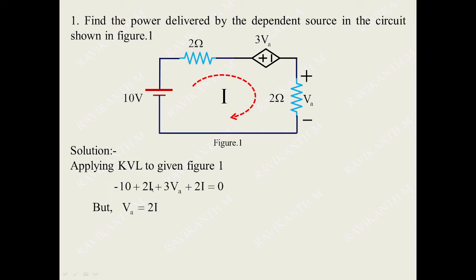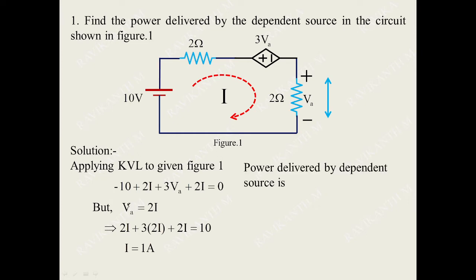We have to replace either i in terms of Va or Va in terms of i. Solving, we get the value of i as 1 ampere. Once we get the value of Va as 2i with i equal to 1 ampere, we can obtain Va equals 2 volts. Once Va is obtained, we can calculate the power delivered by the dependent source.